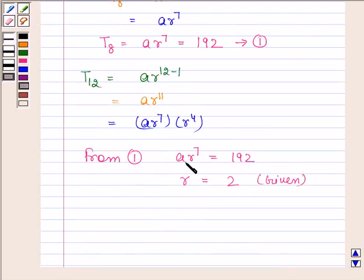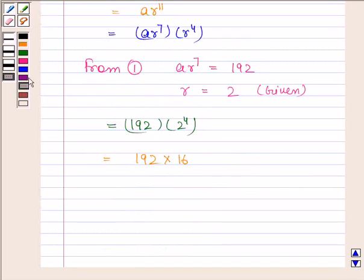Now substitute the value of ar to the power 7 and r in this expression. By substituting the values we get 192 times 2 to the power 4, and this is equal to 192 times 16, and this is equal to 3072. Hence the 12th term of a GP, that is T12, is equal to 3072.